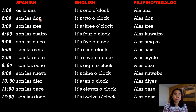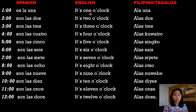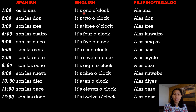Let's start. Es la una — in English, it's one o'clock. In Filipino, a la una. As you can see, we are similar to the Spanish: a la una, es la una. And then, son las dos — it's two o'clock. And in Filipino, a las dos.